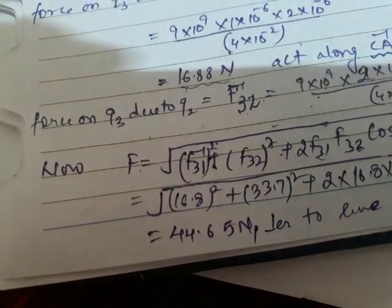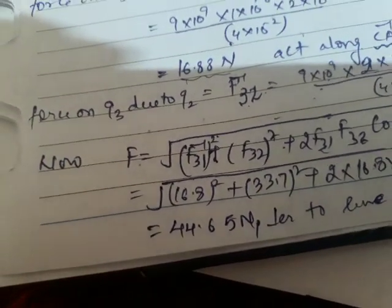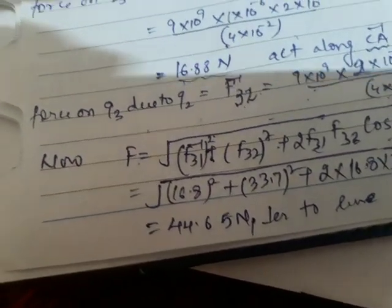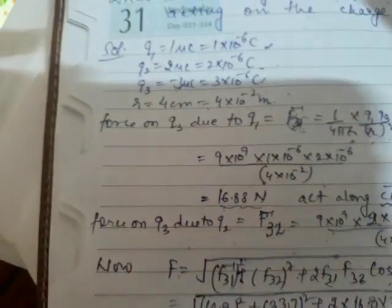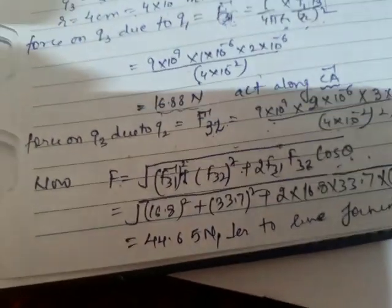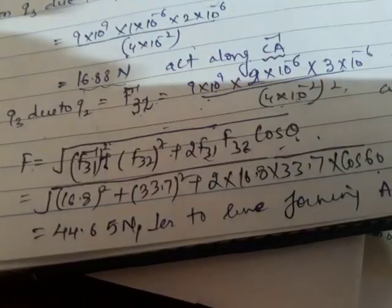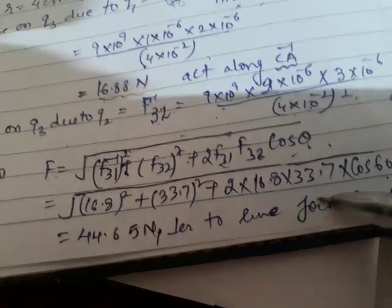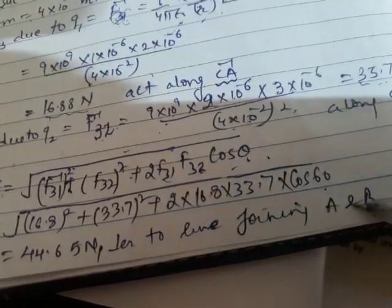The resultant of 44.65 newtons lies perpendicular to the line joining A and B. When you produce the diagonal of the parallelogram, it cuts AC and is perpendicular to AB. So the net force on charge Q3 at point C is 44.65 newtons, directed perpendicular to AB.